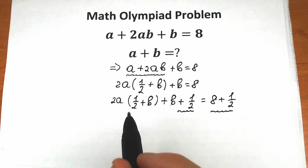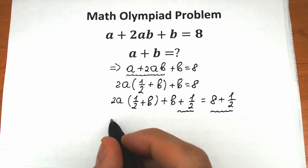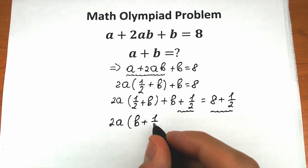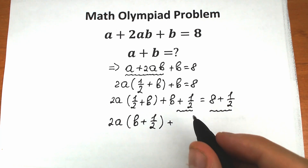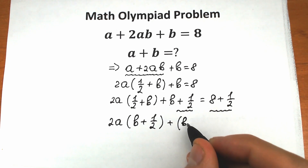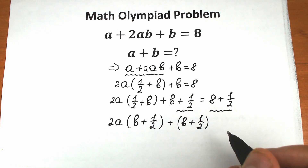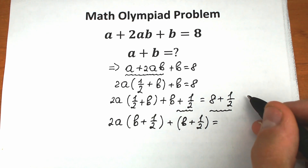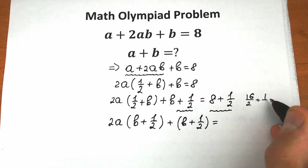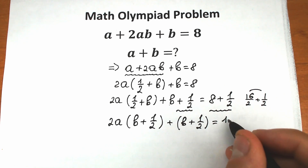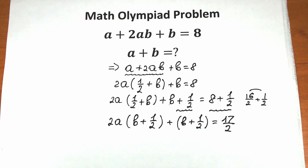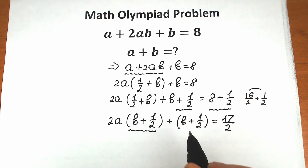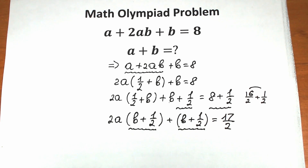Because of the commutative property of addition, we can write 1/2 plus b as b plus 1/2. So now we have 2a times (b plus 1/2), plus (b plus 1/2). Notice we have b plus 1/2 in both terms, so we can factor it out. And 8 plus 1/2 equals 16/2 plus 1/2, which equals 17/2.